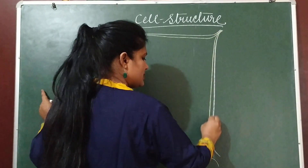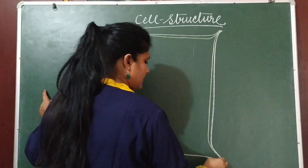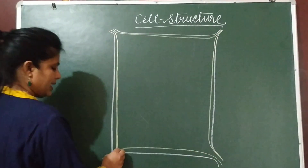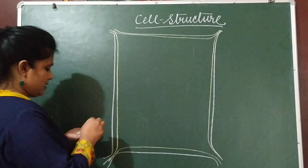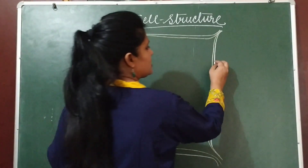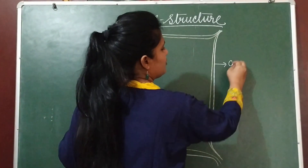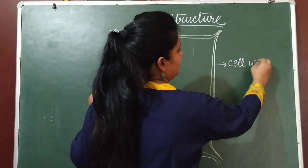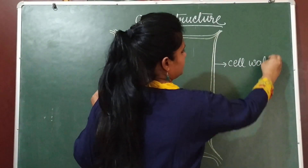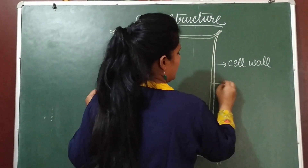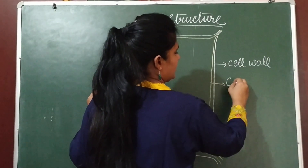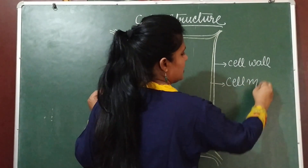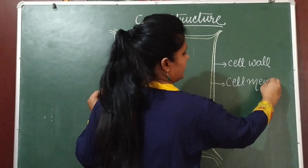Cell wall is absent in animal cell. This is the outermost layer — the cell wall — and this is the inner layer, which is called the cell membrane.